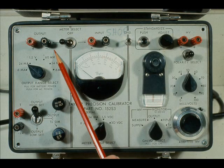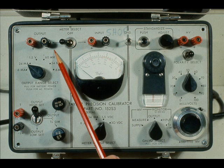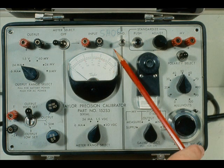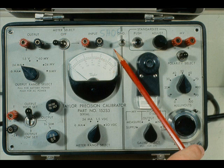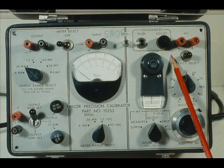The Taylor Precision Calibrator is divided into three sections: the output section, the input section, and the potentiometer section.